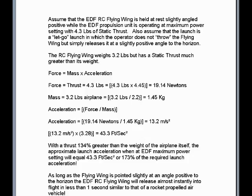The mass of the airplane is 3.2 pounds divided by 2.2, equal to 1.45 kilograms. Acceleration is defined as force divided by mass. Entering in the values: 19.14 newtons divided by 1.45 kilograms gives an acceleration of 13.2 meters per second squared. With 3.28 feet to a meter, multiplying 13.2 times 3.28 gives a launch acceleration of 43.3 feet per second squared. With thrust 134% greater than the weight of the airplane, the approximate launch acceleration at maximum power setting equals 43.3 feet per second squared, or 173% of the required launch acceleration.